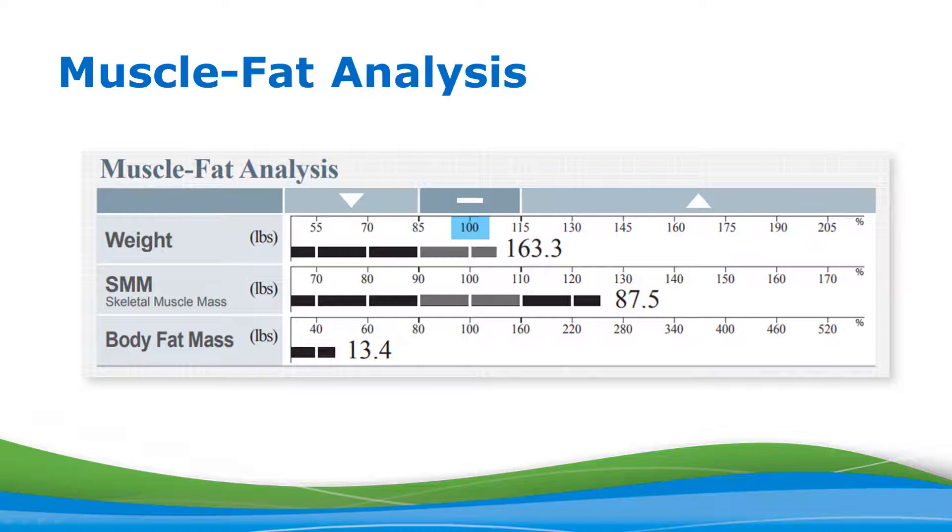Similarly, if the bar extended to only the 70 mark, this would mean you have 30% less than what is considered normal for your height and gender. This individual in our example is slightly above average in weight, approximately 25% above average in skeletal muscle mass, and about 45 or 50% below average in body fat mass.